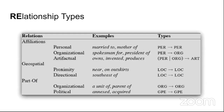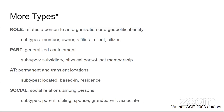Some predefined relationship types include person-to-person (X is married to Y, X is the mother of Y), organizational affiliations (X is the spokesman for Y, X is the president of Y), and location-based relationships such as San Francisco being a city located in California. There are quite a few datasets for relationship extraction, including the ACE dataset released in 2003.